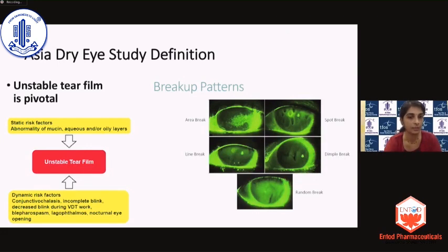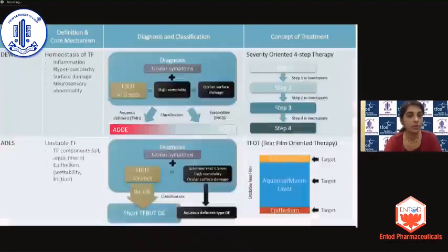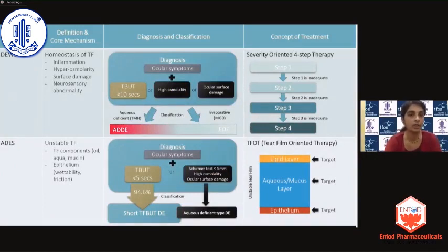The Asia Dry Eye Society goes more by the breakup patterns in patients with dry eye, which has given rise to their thought process of tear film-oriented diagnosis and tear film-oriented therapy, in contrast to the DEWS II diagnosis, classification, and concept of treatment.